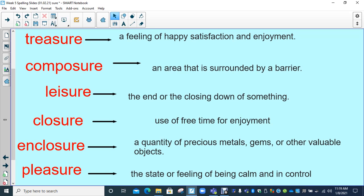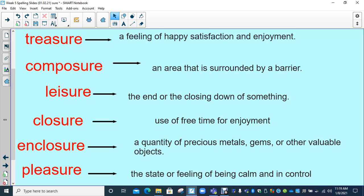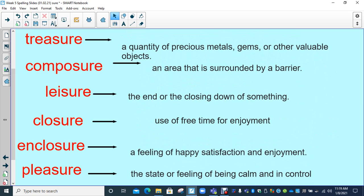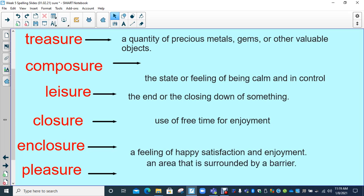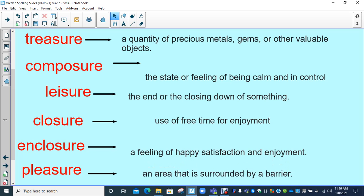Okay, welcome back, lovely year fours. Let's start from the top. Treasure. So we know that treasure is a quantity of precious metals, gems, or other valuable objects. You can think of perhaps pirates' treasure, a lovely big treasure chest. Next, we've got composure, and composure is the state of feeling of being calm and in control. Sometimes we have to remain composed if we are feeling a little bit stressed or annoyed about something.